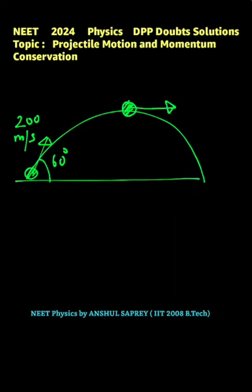At the topmost point, we know that the velocity of the ball before explosion will be u cos 60, that is 200 cos 60, which equals 200 times 1/2, or 100 meters per second. So before collision, the velocity is 100 meters per second.